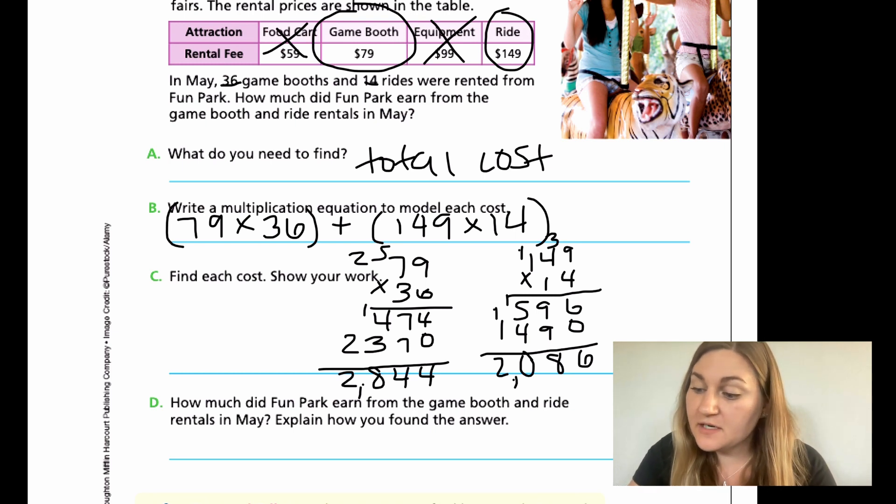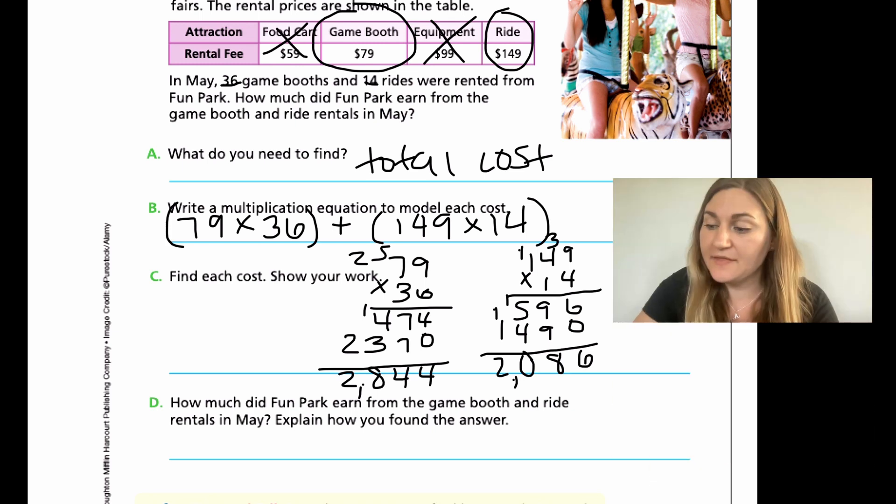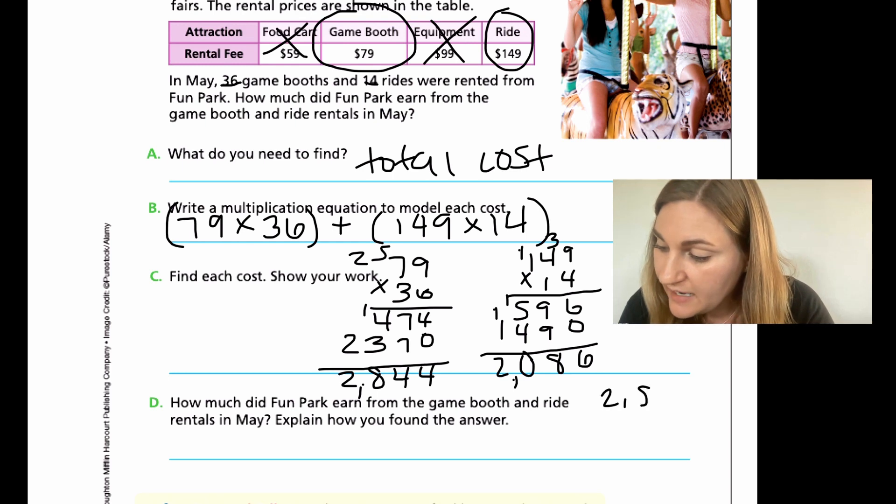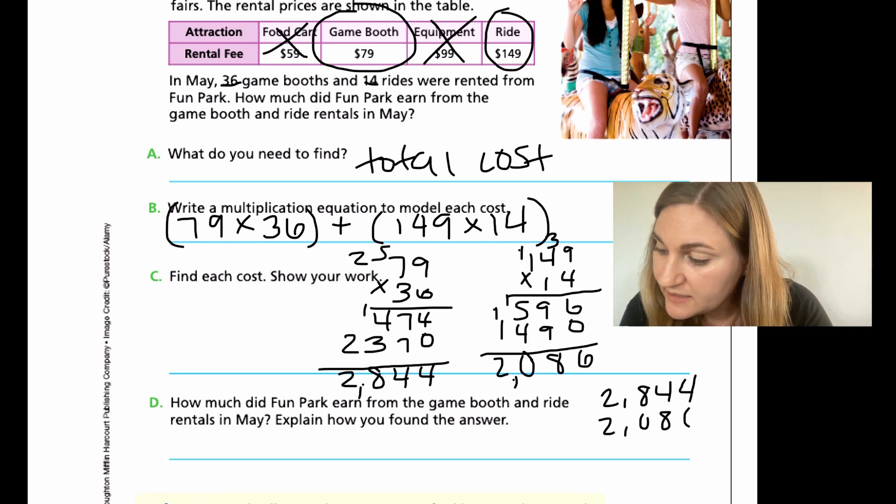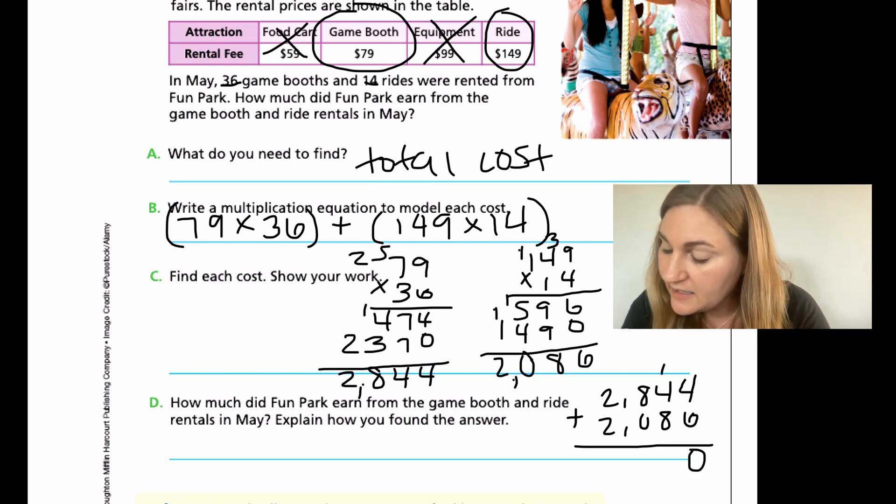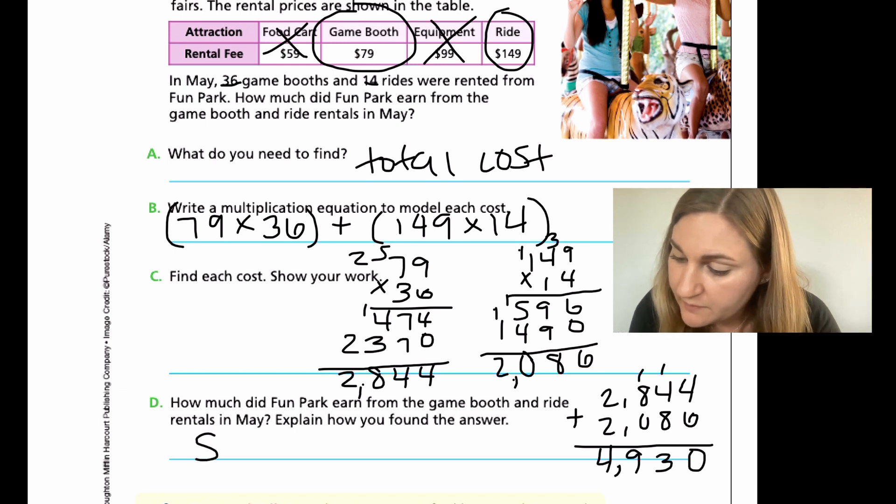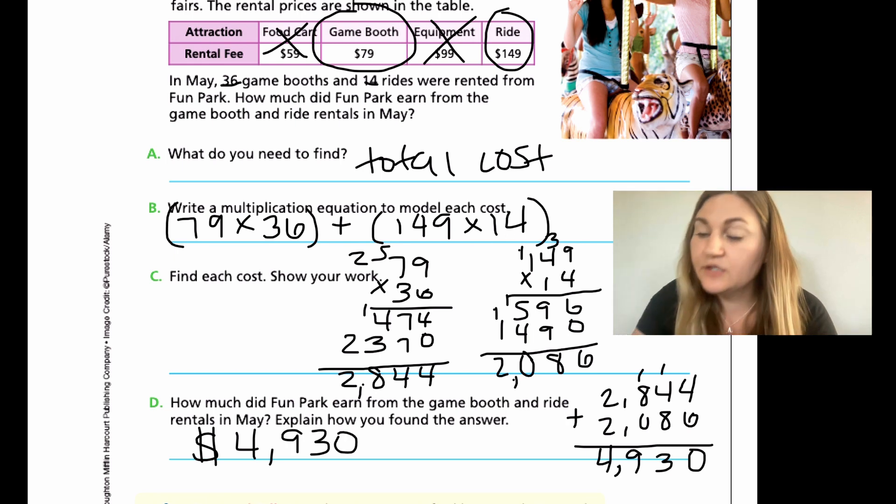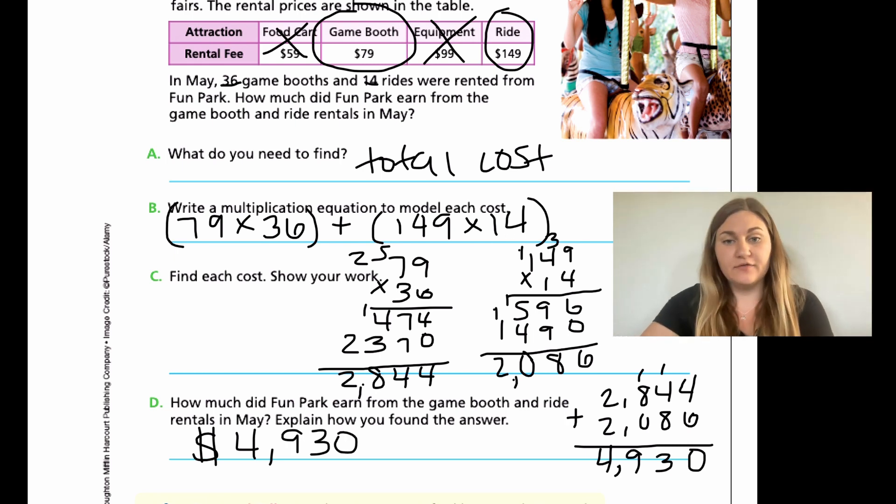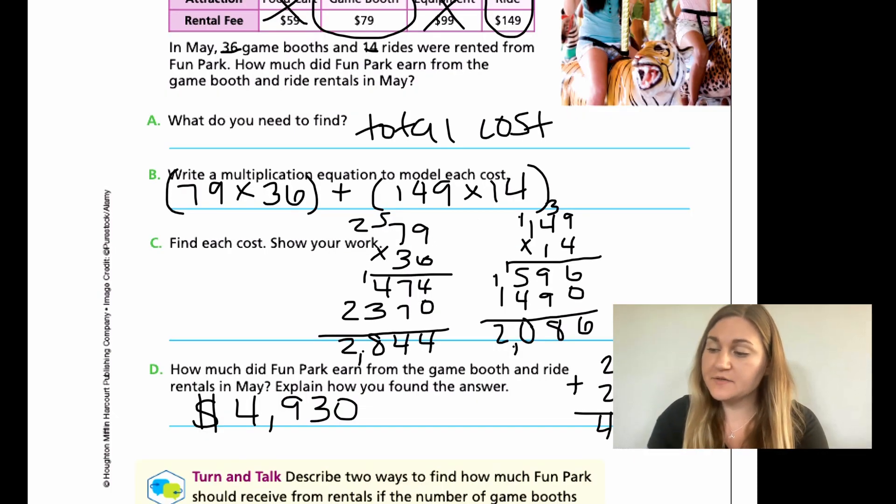So how much did Fun Park earn from the game booth and ride rentals in May? Explain how you found the answer. So now I need to add the two together. 2,844 and 2,086. Adding them together, it's going to be 10, carry that one, 10, 12, 13, nine, and four. So it'll be 4,930. And then in your own words, just go ahead and explain how you found the answer. That was number one.